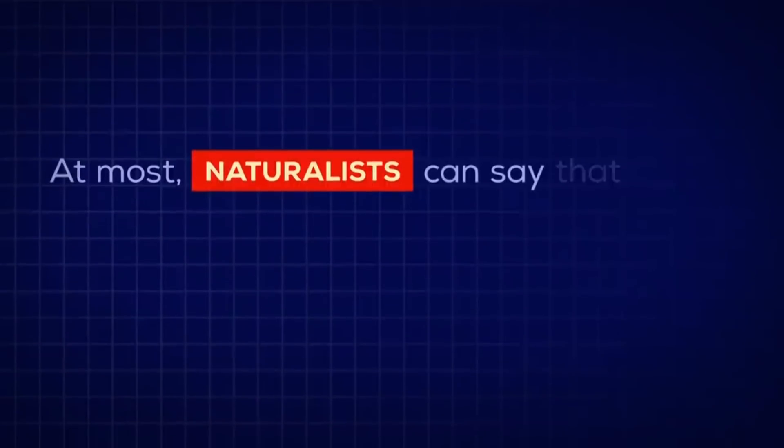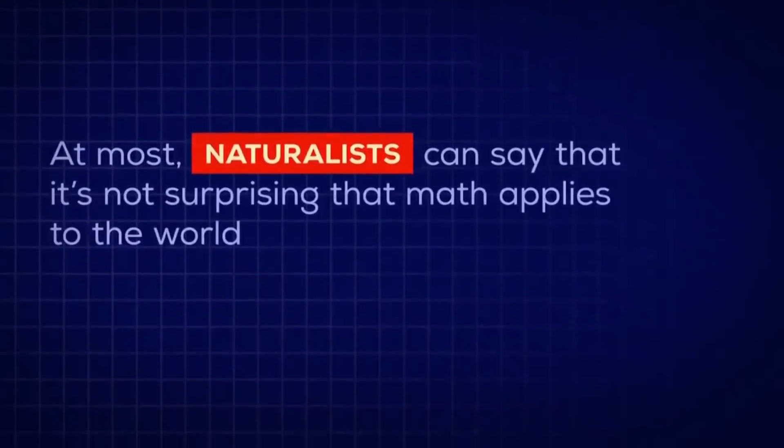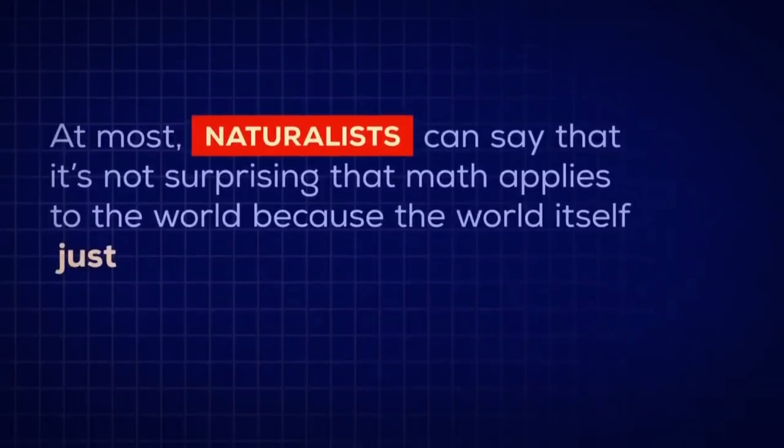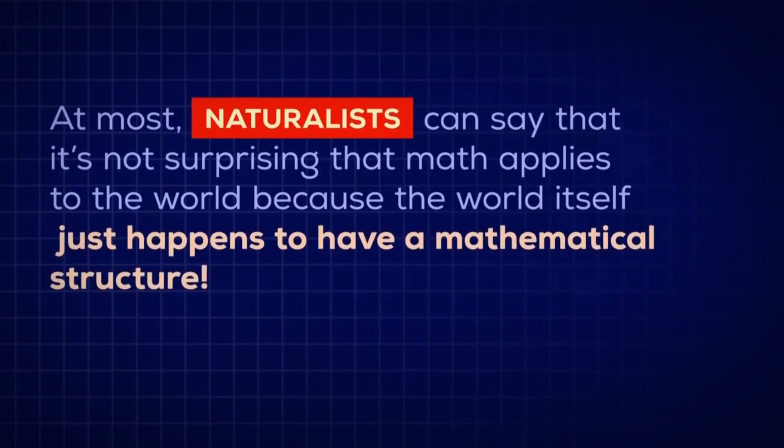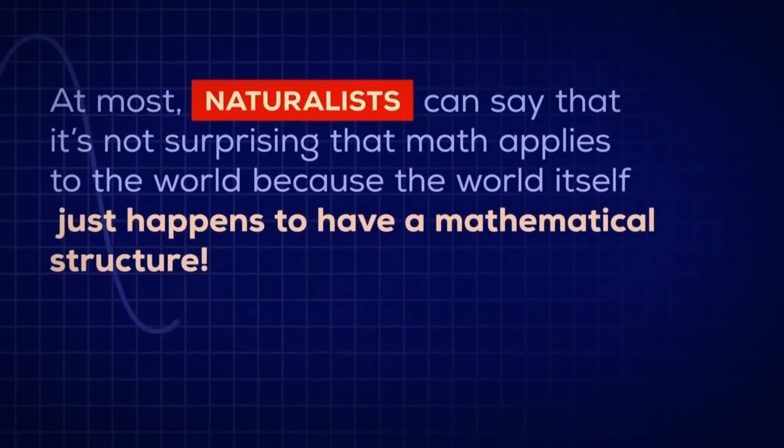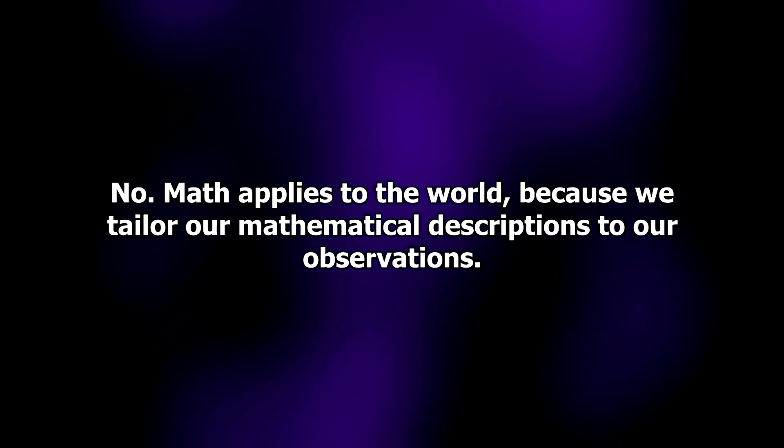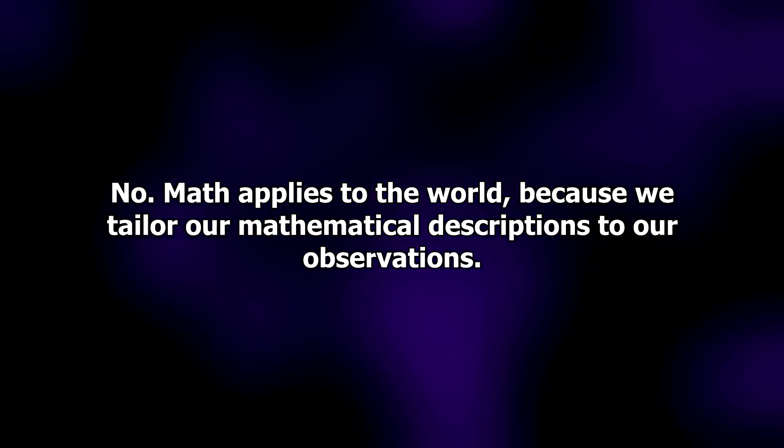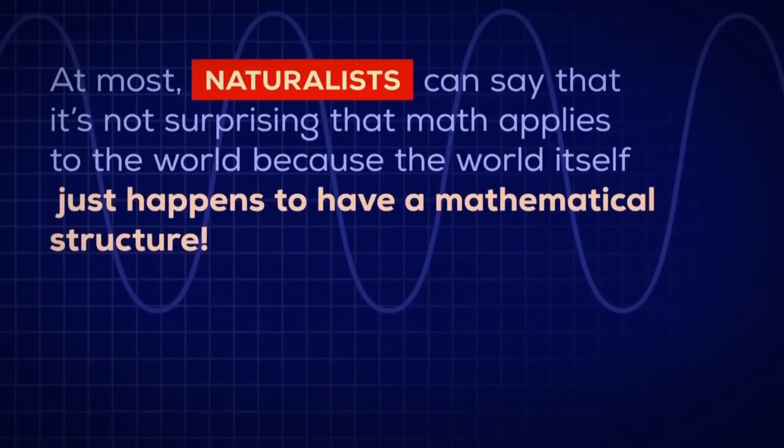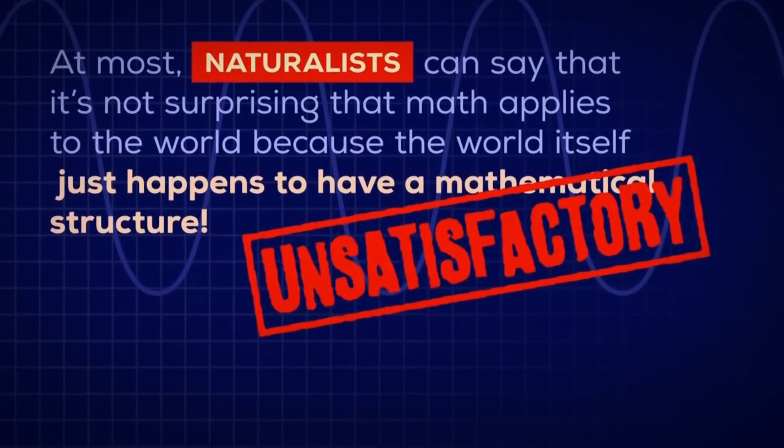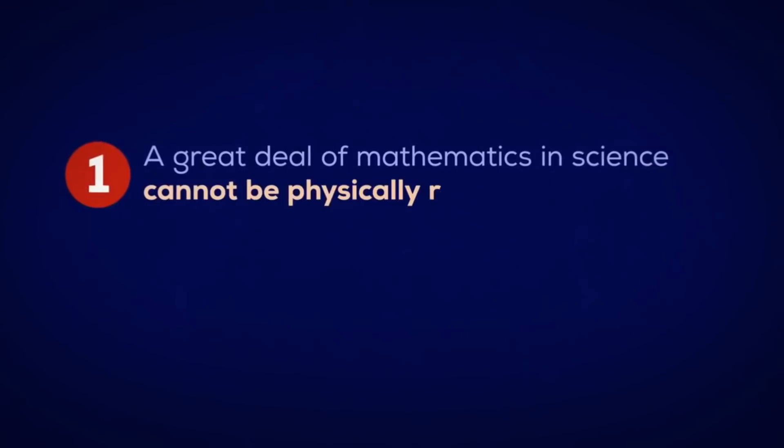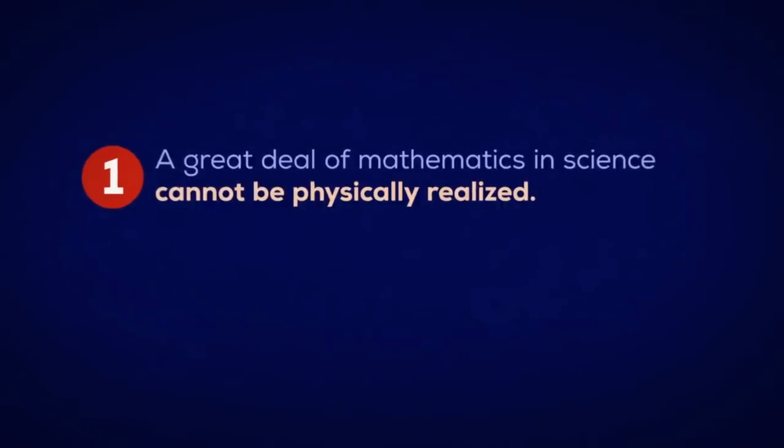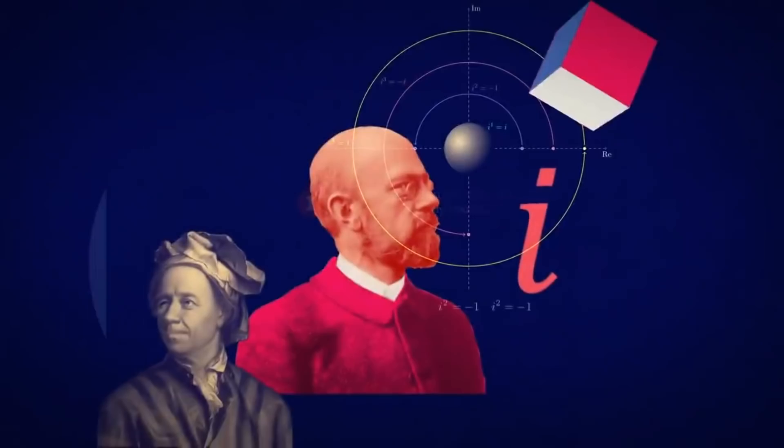At most, naturalists can say that it's not surprising that math applies to the world, because the world itself just happens to have a mathematical structure. So of course mathematics applies to it. No. Math applies to the world because we tailor our mathematical descriptions to our observations. But this explanation is unsatisfactory for two reasons. First, a great deal of mathematics in science cannot be physically realized. For example, imaginary numbers and infinite dimensional spaces.